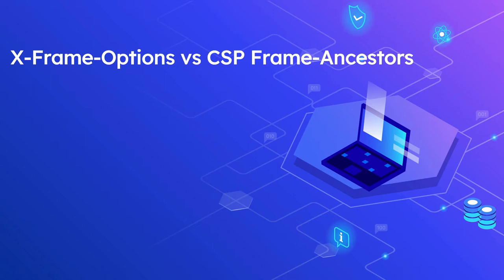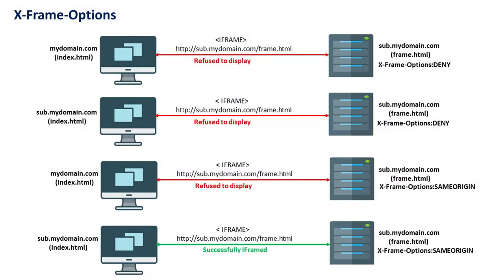The first one is X-Frame-Options deny, then X-Frame-Options same-origin. If you specify deny, the page cannot be displayed in a frame regardless of the site attempting to do so — even framing from the same website will fail. If you specify same-origin, the page can only be displayed in a frame on same-origin pages.